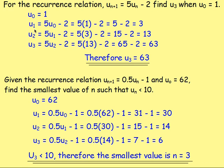We did a few examples working out various terms. If you're given u0 equal to one, you could work out u1, then u2, then u3, using your Recurrence Relation. The first example was straightforward — working out u3. The second required finding the smallest value of n such that un would be less than 10, and we went through that.